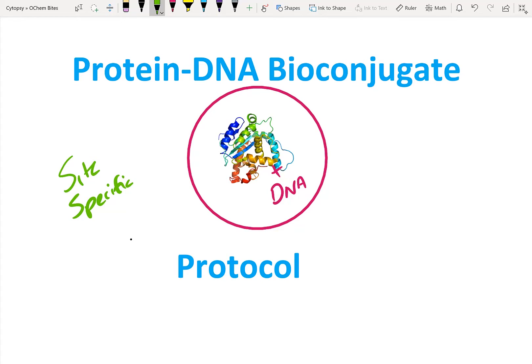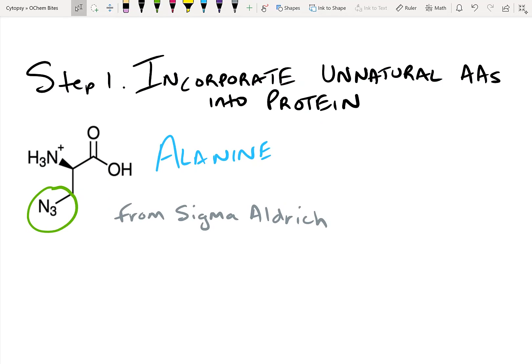If you're interested in learning bioconjugation techniques like these, follow this channel by clicking the like and subscribe buttons, and you'll be notified anytime there's a new video about a different bioconjugation technique. Unnatural amino acids are a great way to introduce moieties into proteins that can be easily attached to.